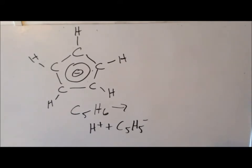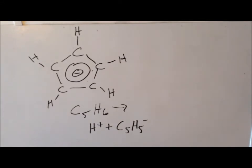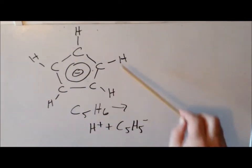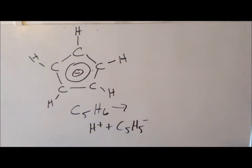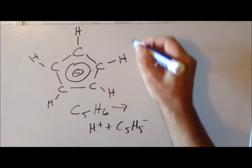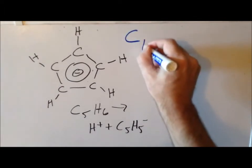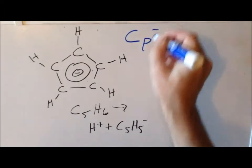Recalling Hückel's rule — the formula 4n+2, where n is an integer — something with 4n+2 pi electrons will be aromatic. So here we have a five-member aromatic ring. In inorganic chemistry, we refer to this species using the symbol Cp, or sometimes Cp⁻ to emphasize that it is an anion.